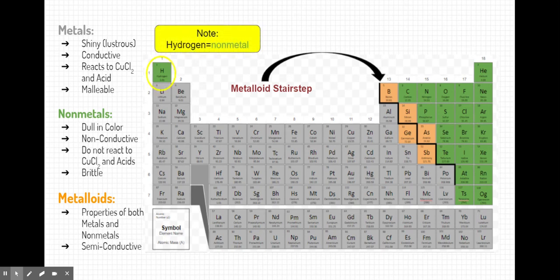Now, a couple notes. There are some exceptions based on placement. Notice hydrogen is a non-metal, even though it's on the metal side. Same thing, aluminum is touching that stair step. So technically it should be a metalloid, but it's not. We know that aluminum is a metal, unlike the other metalloids touching that stair step.